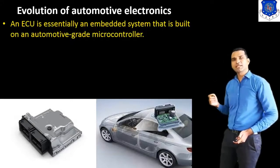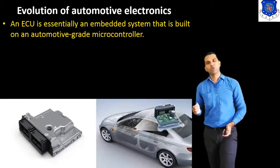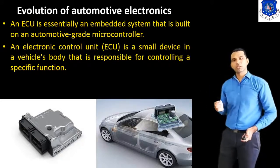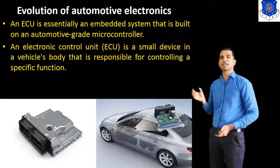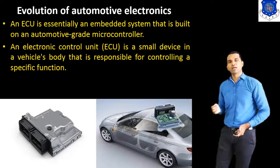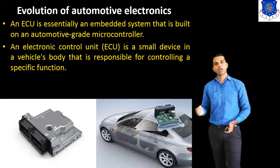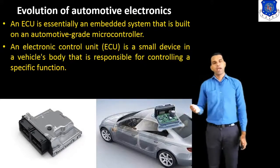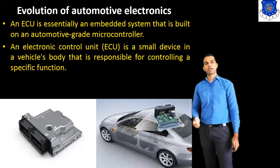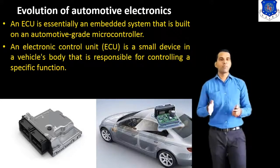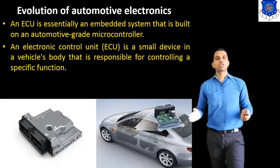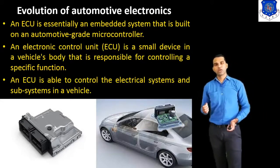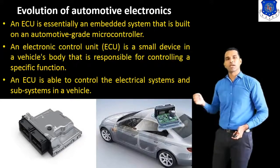An ECU is an essential system that is built on the automotive-grade microcontroller. An Electronic Control Unit — ECU — is a small device in a vehicle body that is responsible for controlling a specific function. Here in this figure, we can see the ECU located inside the car. It is a type of microcontroller that controls all the electronic systems inside the car, including subsystems in the vehicle.